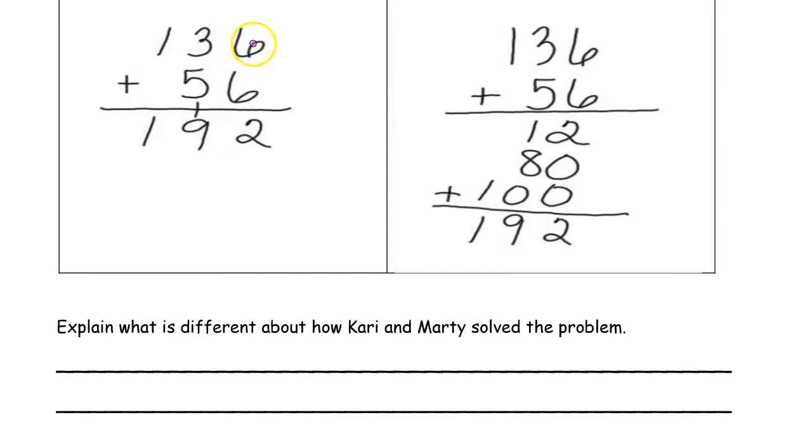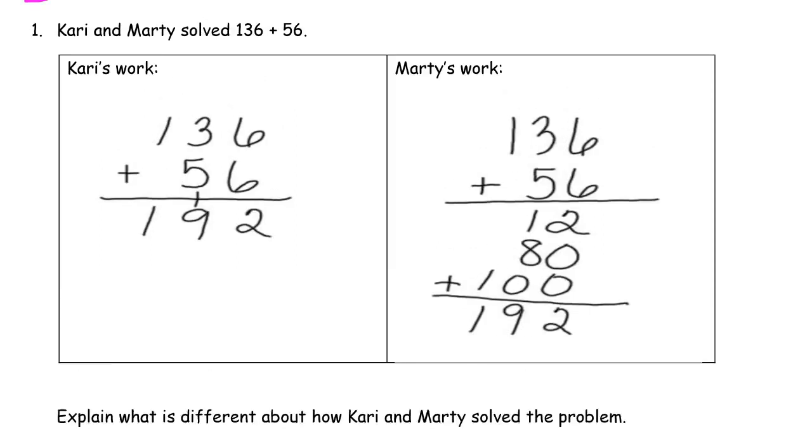We can say Carrie bundled ones to make tens, but Marty didn't. Because here Carrie bundled ones to make a ten.